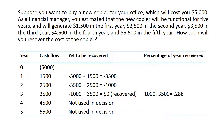To make it simple, I'm using a table. The example says: suppose you want to buy a new copier for your office which will cost you $5,000. As a financial manager, you estimated that the new copier will be functional for five years and will generate $1,500 in the first year, $2,500 in the second year, $3,500 in the third year, $4,500 in the fourth year, and $5,500 in the fifth year. How soon will you recover the cost of the copier? We have year zero, which is today, then years one through five, and the cash outlay of $5,000 as a negative number at year zero.